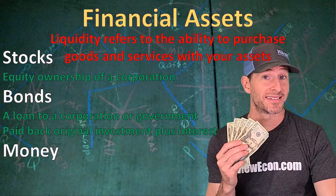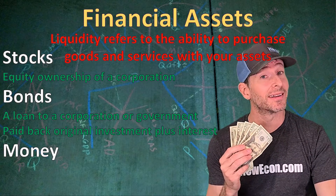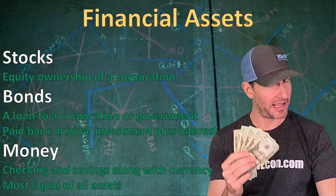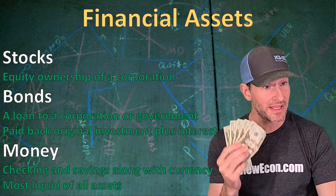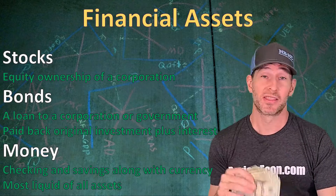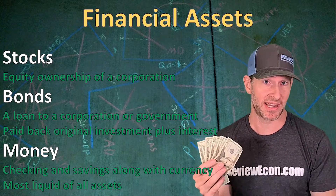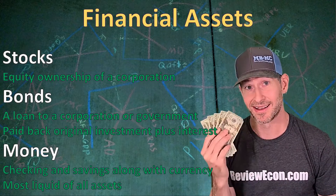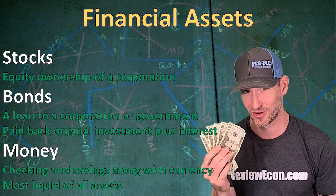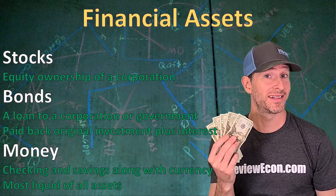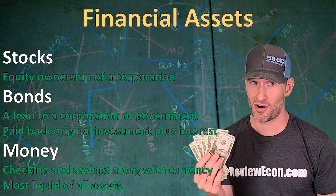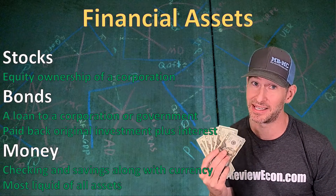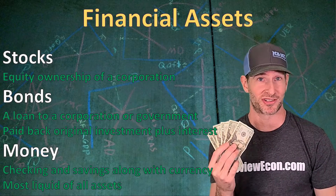The last financial asset we're going to talk about is, of course, money. Money is liquid — it can be used immediately to purchase goods and services. Money can be in my checking or savings account, or it can be in the form of currency, cash, or coins. Currency is, of course, the most liquid of all financial assets. It can be immediately used to purchase goods and services.